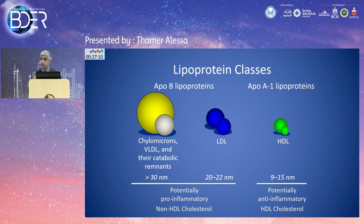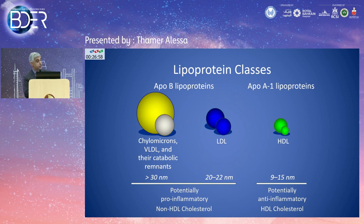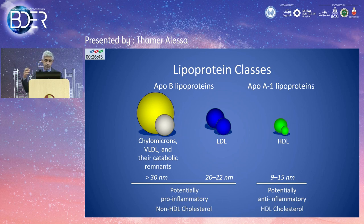ApoB lipoproteins come in two isoforms — ApoB48 and ApoB100 — depending on where they originate and perform. Chylomicrons and VLDLs usually have many triglyceride-rich particles originating from either the GI tract or the liver. Chylomicrons drive triglycerides from the gut towards the liver, while VLDL transports them from the liver to the circulation, where they exchange lipids with HDL and form LDL — another important marker for pro-inflammatory lipoproteins.